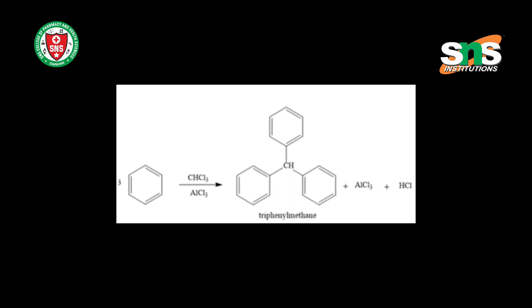The tri-phenyl methane group is called the trityl group. For example, tri-phenyl methyl chloride is called trityl chloride, and the tri-phenyl methyl radical is called the trityl radical.